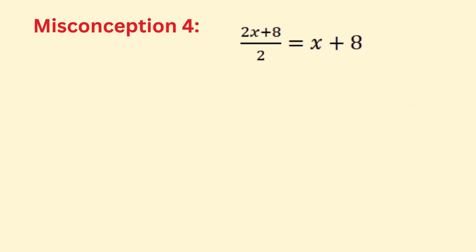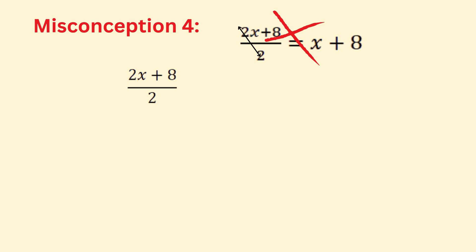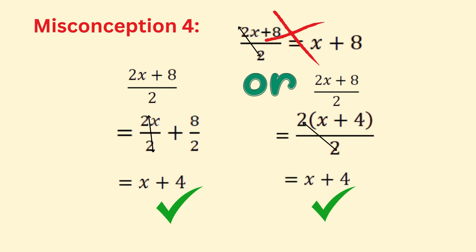Students sometimes incorrectly cancel the 2 in the numerator, but both terms in the numerator must be divided by 2. To fix this, rewrite the expression as 2x/2 + 8/2 = x + 4, or factor 2 from the numerator then divide numerator and denominator by 2 to get x + 4. Key tip: treat each term in the numerator separately when dividing.